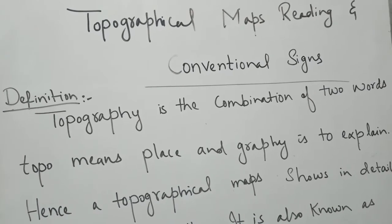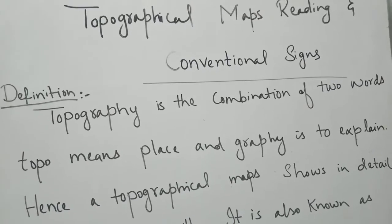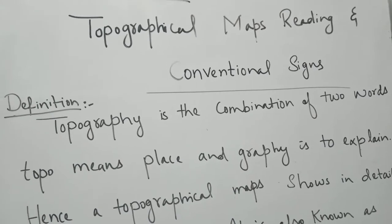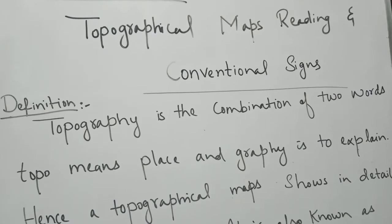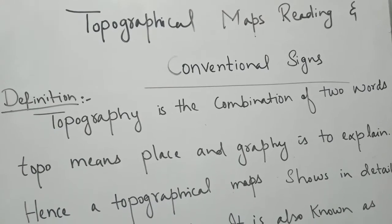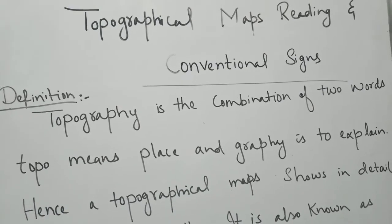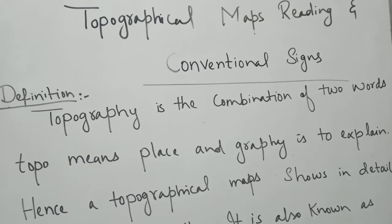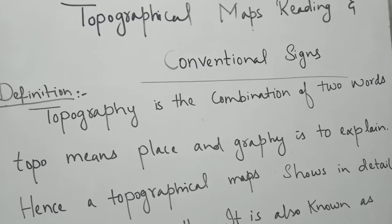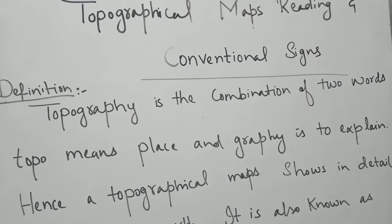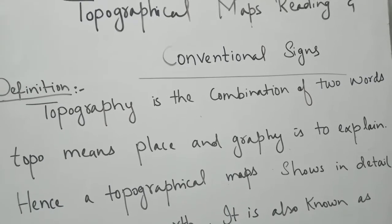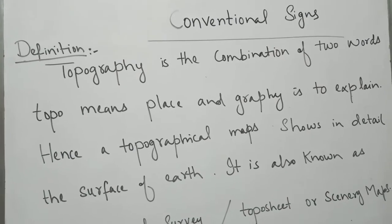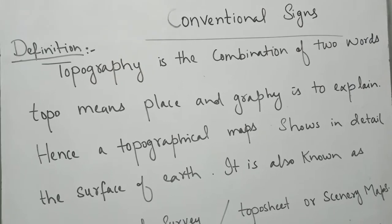Which type of methods, signs, or symbols we can use to understand the topographical maps easily — this is our main objective to conduct this practical. For this, firstly we need to know what topographical maps basically are. In the first part, I had given you a complete definition of the topographical map and then the main purpose of why we need to draw the topographical map. Just take a look at the topographical map definition at first.